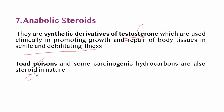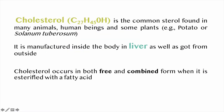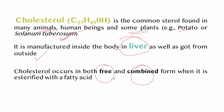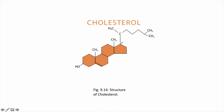Cholesterol is a common sterol found in many animals, human beings, and some plants — for example potato (Solanum tuberosum). It is manufactured in the liver and also obtained from outside. Cholesterol occurs in free form and in combined form where it is esterified with fatty acids. In the structure, carbon 17 has an unsaturated long aliphatic chain, carbon 3 has a hydroxyl group, and carbons 10 and 13 have methyl groups (CH3) forming carbon numbers 19 and 18.